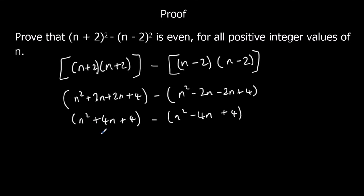Then we take them away. So n squared take away n squared is nothing. 4n take away minus 4n — minus minus makes plus — so 8n. And 4 minus 4 is nothing. So it simplifies to 8n.